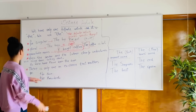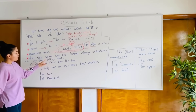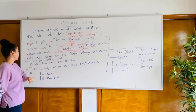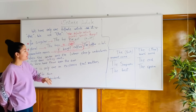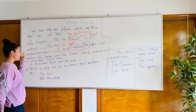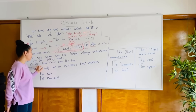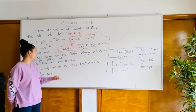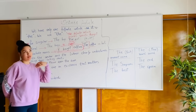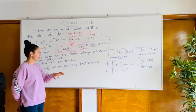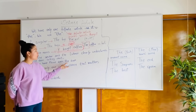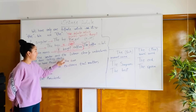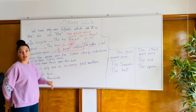Let's move on to the next: when to use 'the.' When the speaker and the listener clearly understand which thing they're talking about. For example: 'Please, open the door.' Here, I and my daughter, or my husband, or a friend, just arrived home. We both know which door needs to be opened. You use 'the' to specify 'the door.'